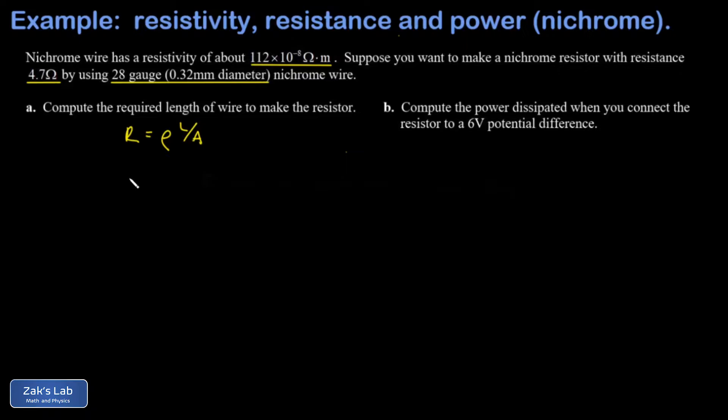So all we have to do is solve this for L, and I get R A over rho, and we just plug the numbers in. So R is 4.7 ohms.